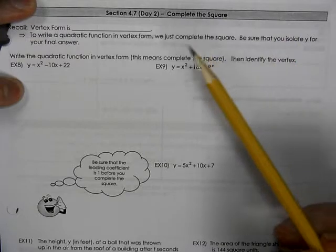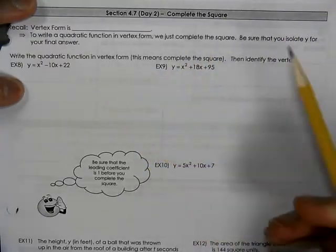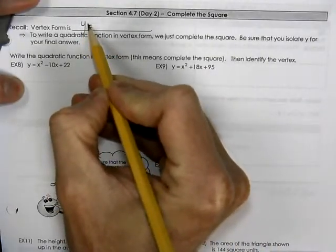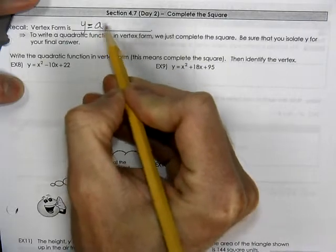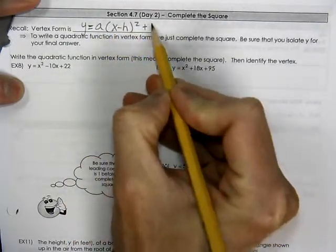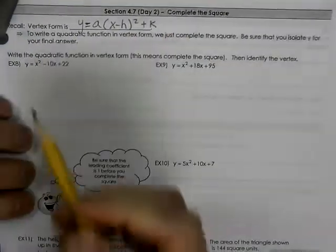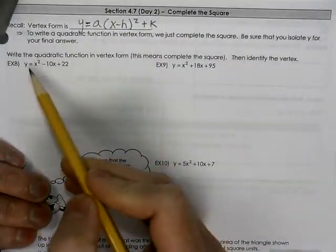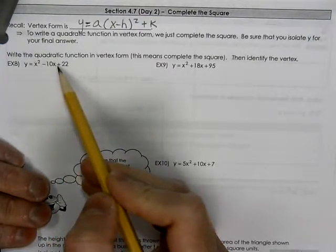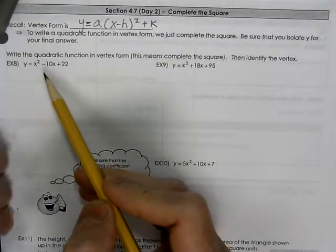We're specifically going to look at how to turn standard form into vertex form. Vertex form, remember, is y equals a(x minus h) squared plus k. So we're looking here at standard form, which we would say was ax squared plus bx plus c. That would be your typical way to explain standard form.